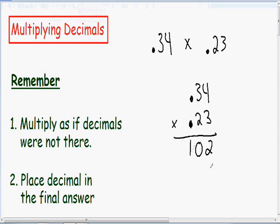In our second line we need to place our 0. And we have 2 times 4 which is 8. And 2 times 3 which is just 6.